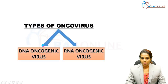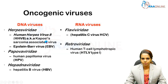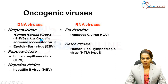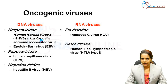Types of Oncoviruses: oncoviruses are classified into DNA oncogenic viruses and RNA oncogenic viruses. The DNA oncogenic viruses include Herpesviridae, which contains HHV-8 (human herpesvirus-8), associated with Kaposi's sarcoma and called Kaposi's sarcoma-associated virus, as well as Epstein-Barr virus, human papillomavirus, and Hepatitis B virus.